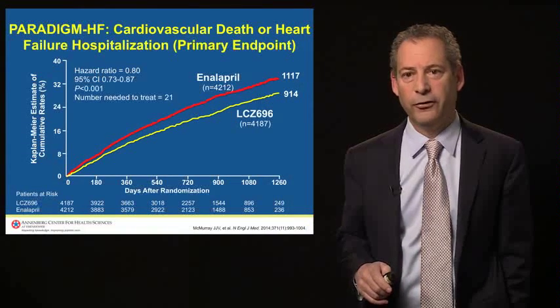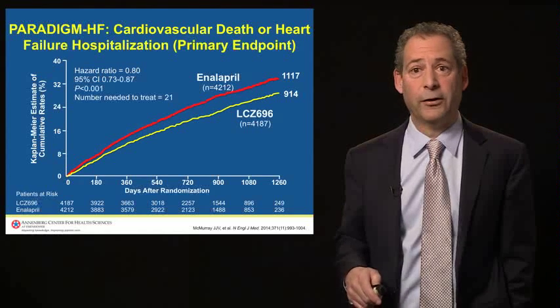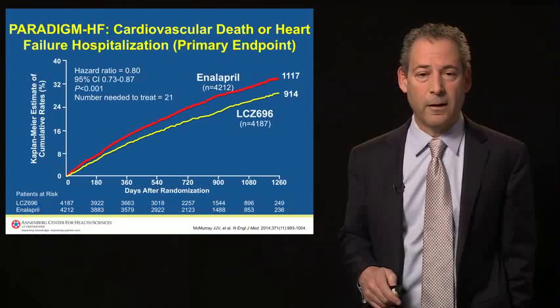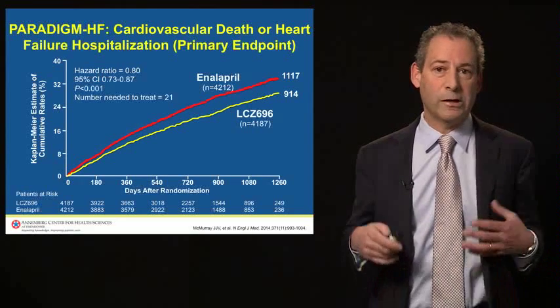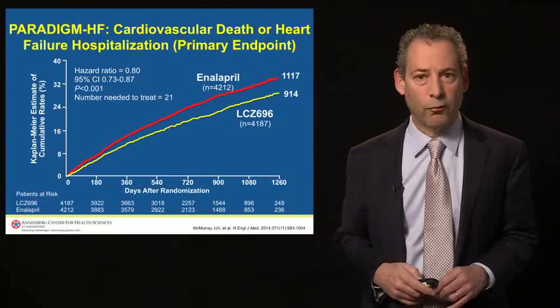The primary endpoint of the trial was a combination of cardiovascular death or heart failure hospitalization. This trial was powered to detect a difference in cardiovascular mortality. It was the largest heart failure trial ever done, performed in 8,442 patients. The primary result of PARADIGM showed a very significant 20% reduction in the composite endpoint of cardiovascular death or heart failure hospitalization, with a p-value of 4×10⁻⁷. The number needed to treat was 21 over the course of the trial.